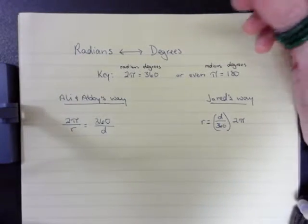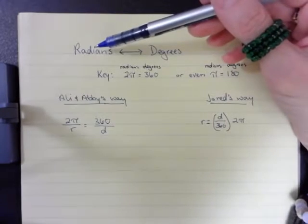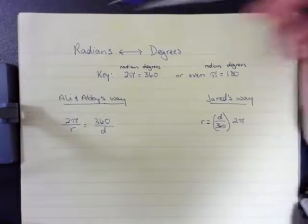Okay, so going back to what we did in class today, we're taking radians and degrees, and we're trying to convert from one to the other.